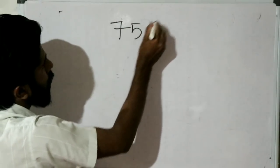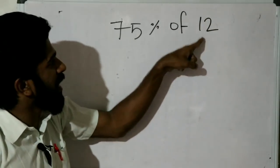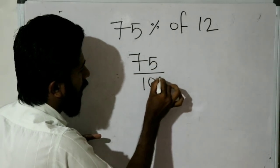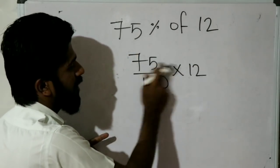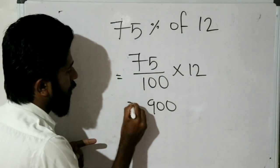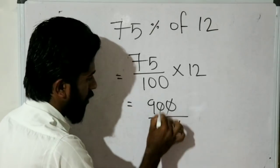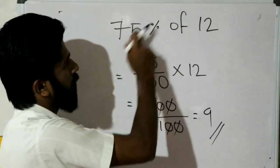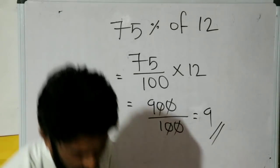Next: 75 percentage of 12. 75 divided by 100 into 12. 75 into 12 is equal to 900, divided by 100. Therefore the answer is 9. 75 percentage of 12 is 9.